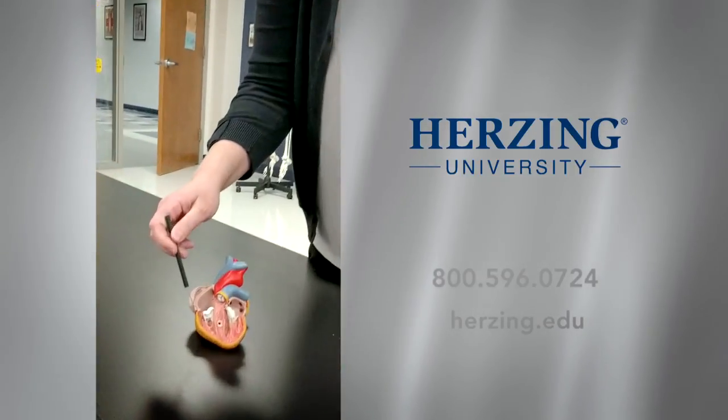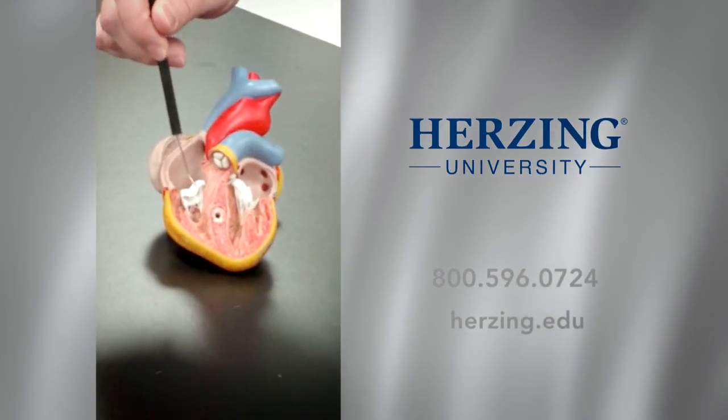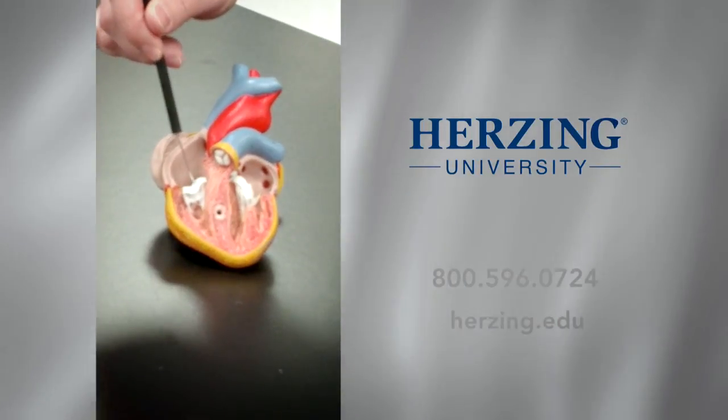So here's the heart. I have it open and you can see some of these valves here. This one on the right side of the heart is called the tricuspid valve.